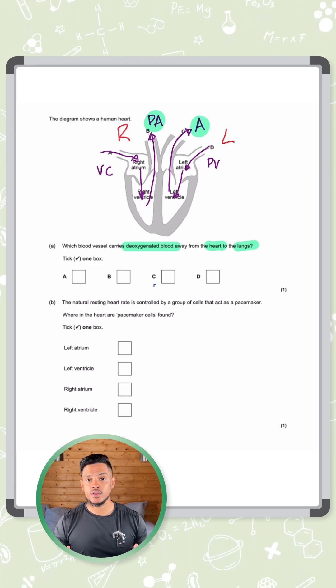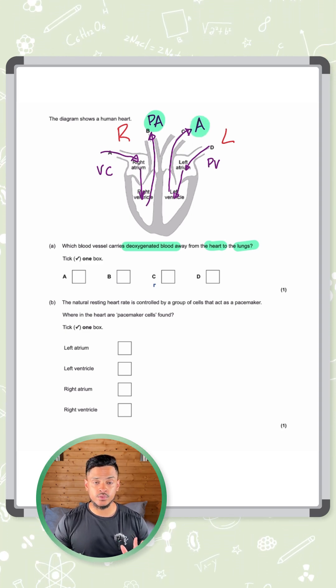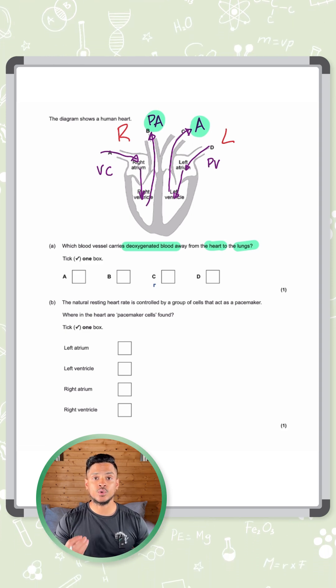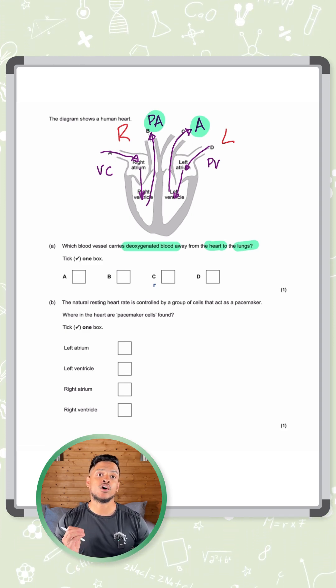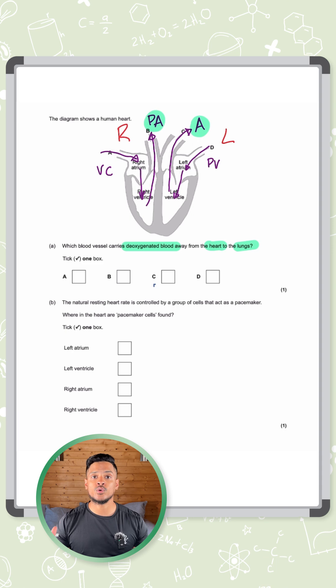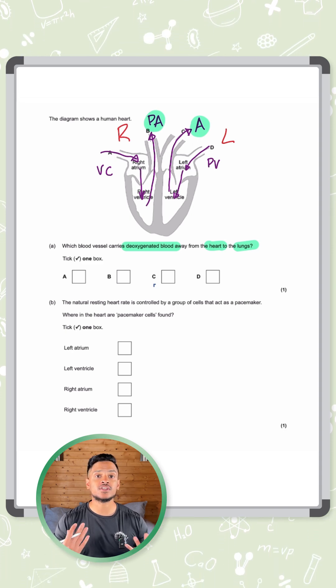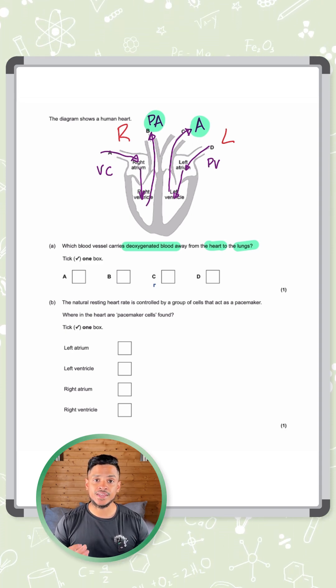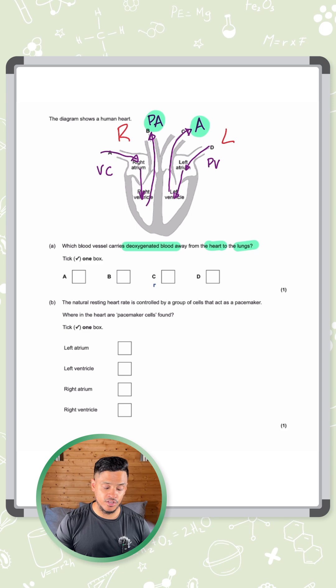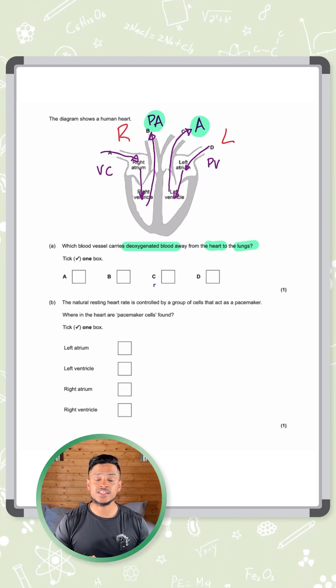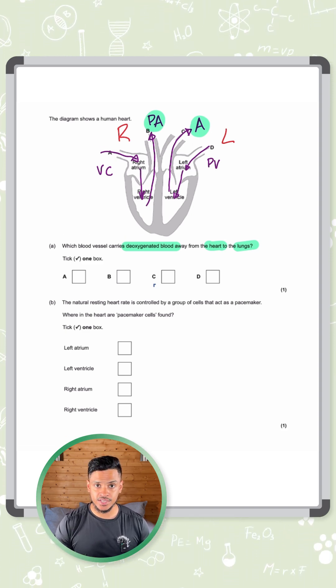Now you need to remember where each one goes. The aorta goes to the rest of the body in order to give that oxygenated blood to all the cells in the body. Then it returns to the right-hand side of the heart, and when it gets pumped out of the right-hand side, it goes through the pulmonary artery to the lungs.